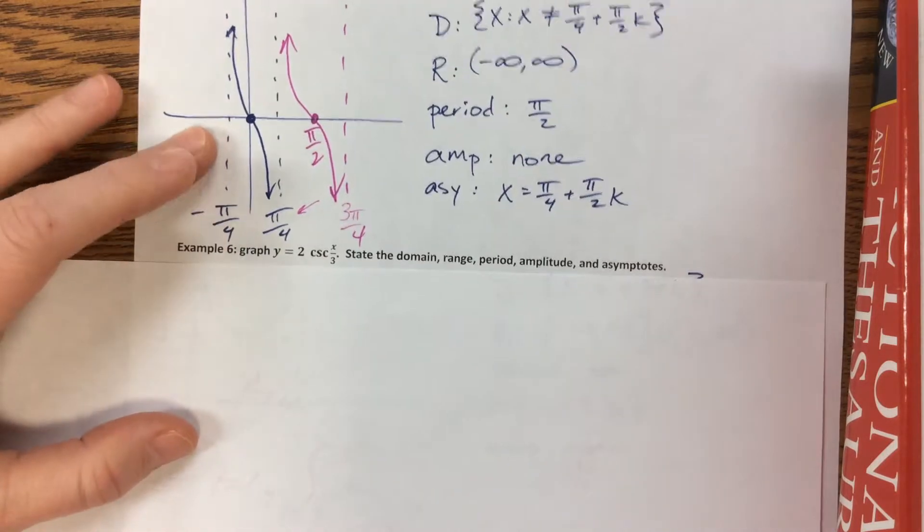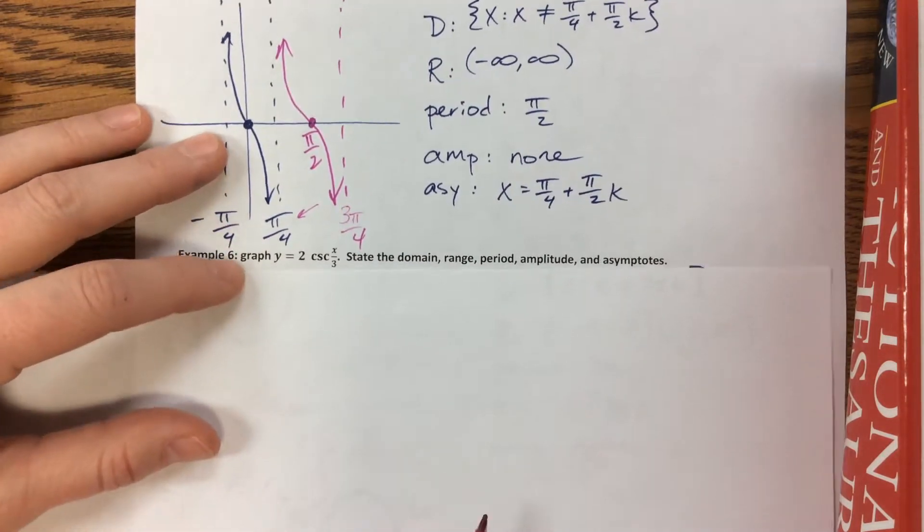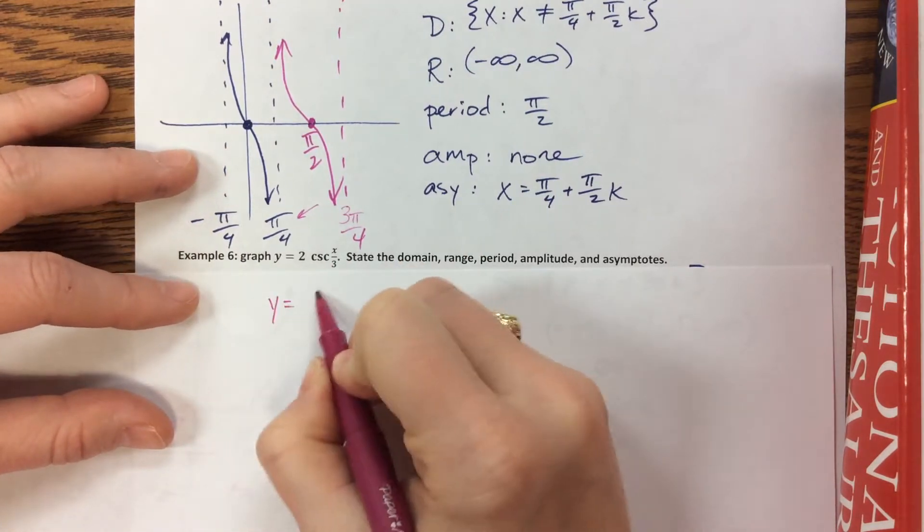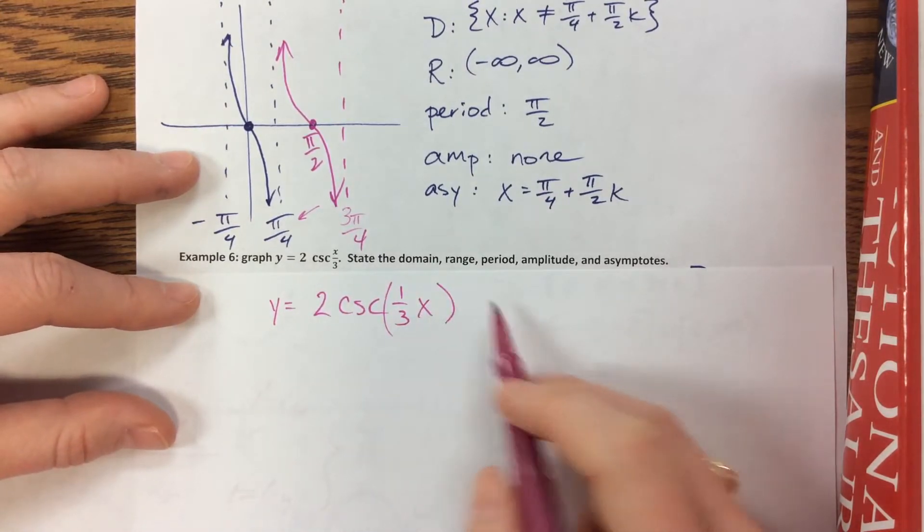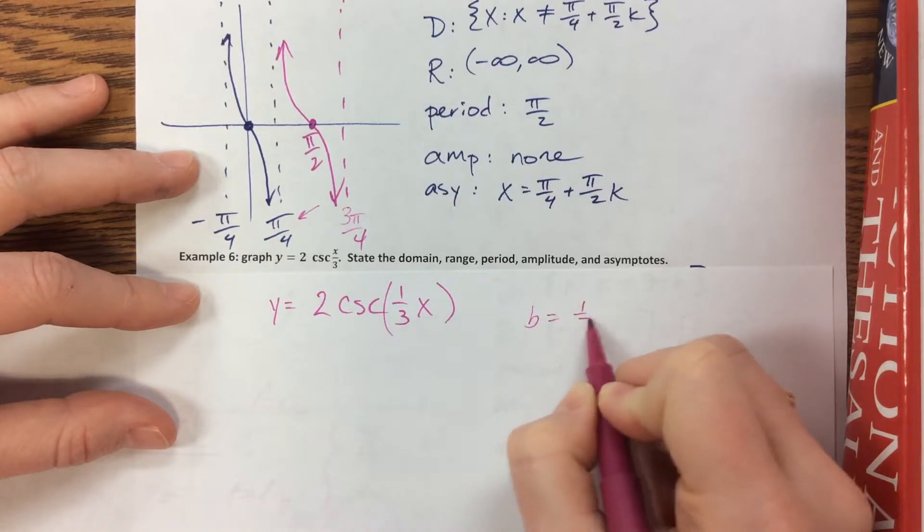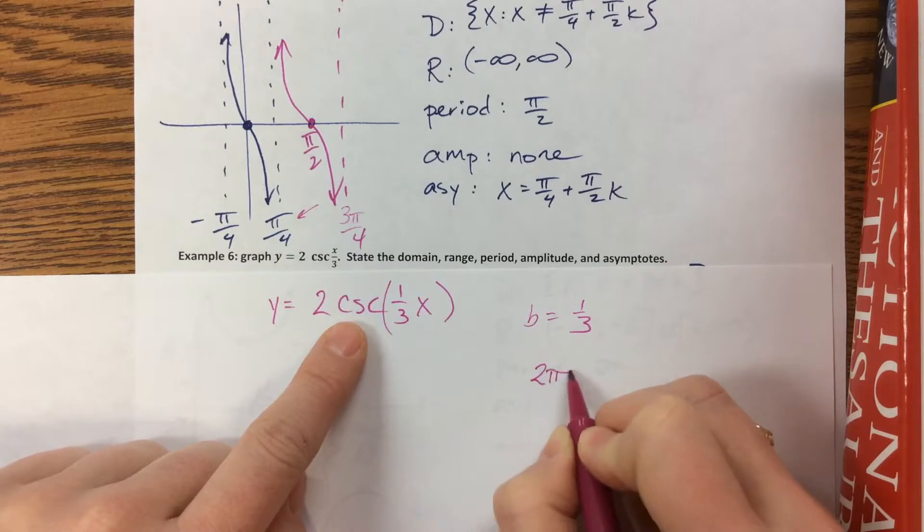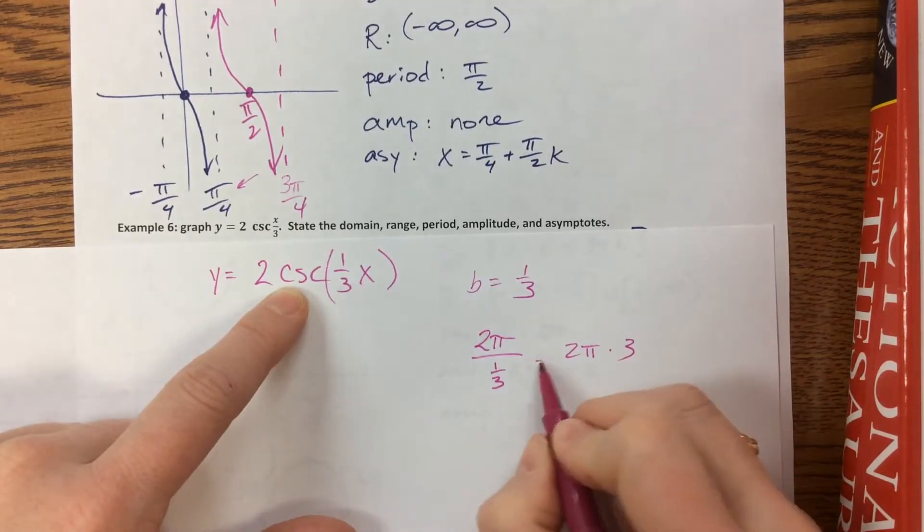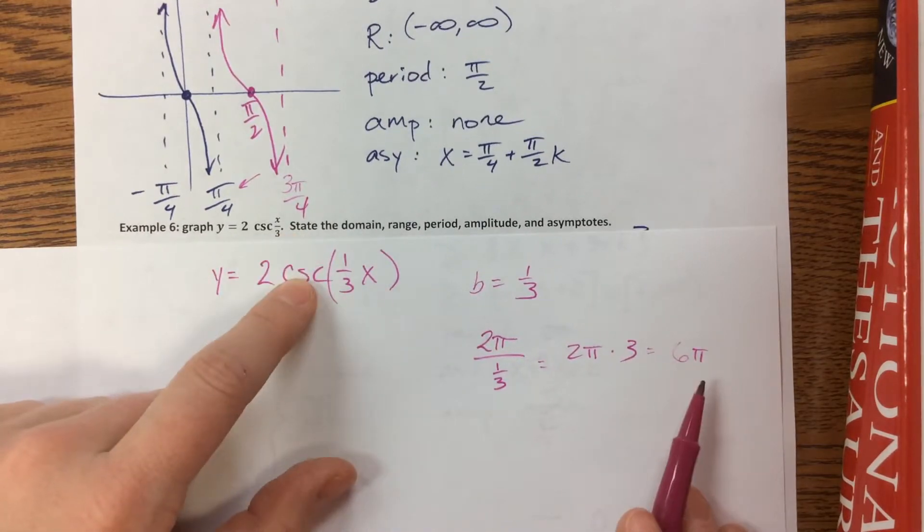Okay, so the last one is 2 cosecant of x/3. And notice on this one, they wrote it in a way, by they I mean me. Sometimes it's more helpful to see it like this because then you can see, okay, my b value is equal to 1/3. So then what I have, this is cosecant, cosecant's parent function has a period of 2π. 2π divided by 1/3, that means 2π times 3. So our period of this new guy is 6π.